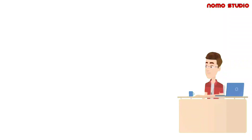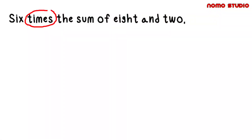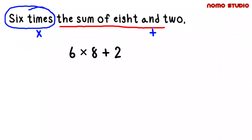Some expressions are slightly more complicated — for instance, some include more than one math operation. Take this example: '6 times the sum of 8 and 2.' If you were to translate this word for word, you'd change 'times' to a multiplication symbol and put a plus sign between 8 and 2. However, this wouldn't give the right answer, because the order of operations would call for you to multiply 6 times 8 first, then add 2. But our expression asks us to multiply 6 by the sum of 8 and 2 — meaning we need to add 8 and 2 first, then multiply that number by 6.